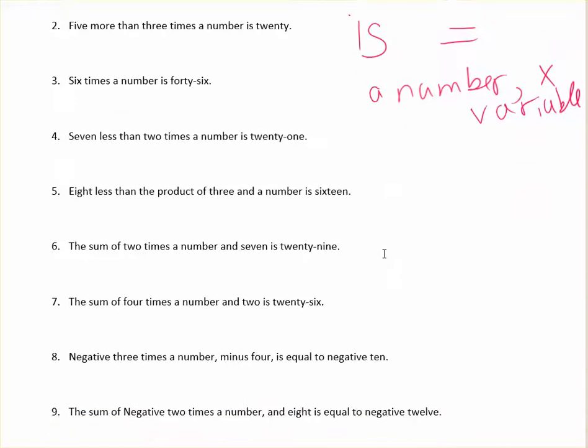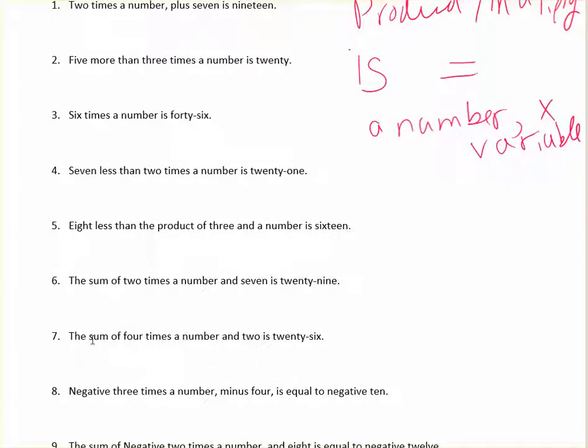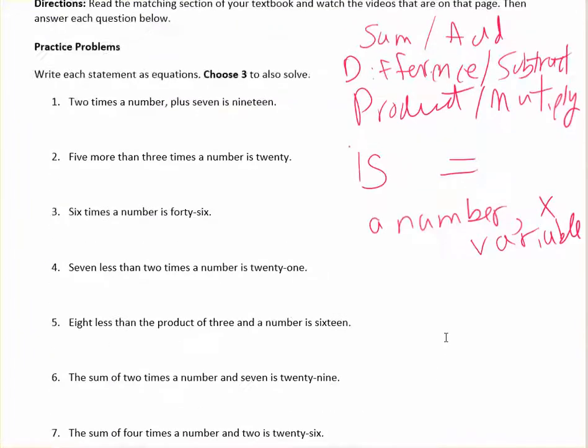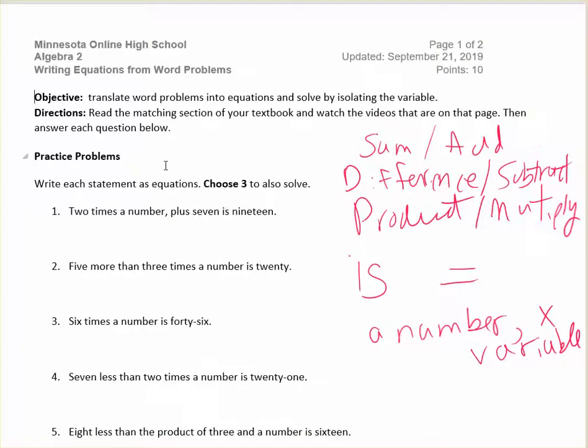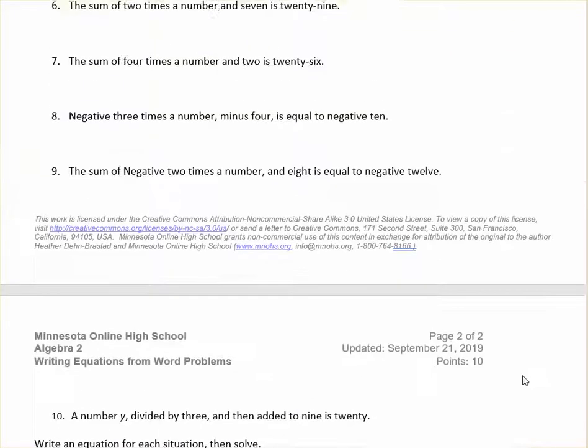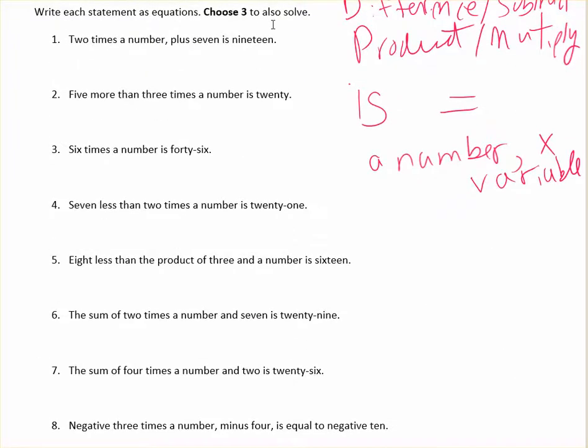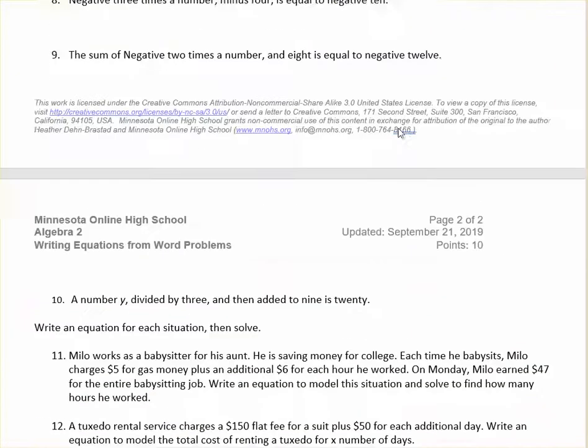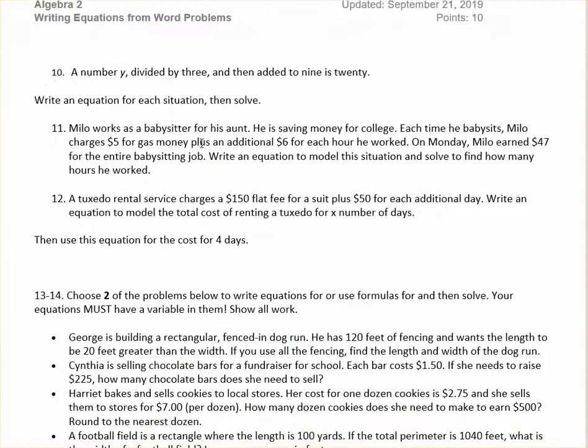So really you're just translating. You're just figuring out from words how you would write that with numbers and symbols. These are equations, which means there will be an equal sign. And for this, you're supposed to choose three of this first section, which goes up to number 10. Choose three of them to also solve and show your work when you solve.